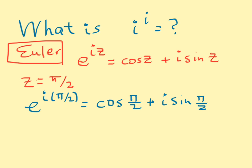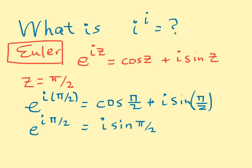Now let's simplify that, knowing that the sine of π/2 is equal to 1 and the cos of π/2 is equal to 0. We now have that e to the iπ/2 will be equal to 0 plus i times sine of π/2, and sine of π/2 is equal to 1, so e to the iπ/2 equals i.